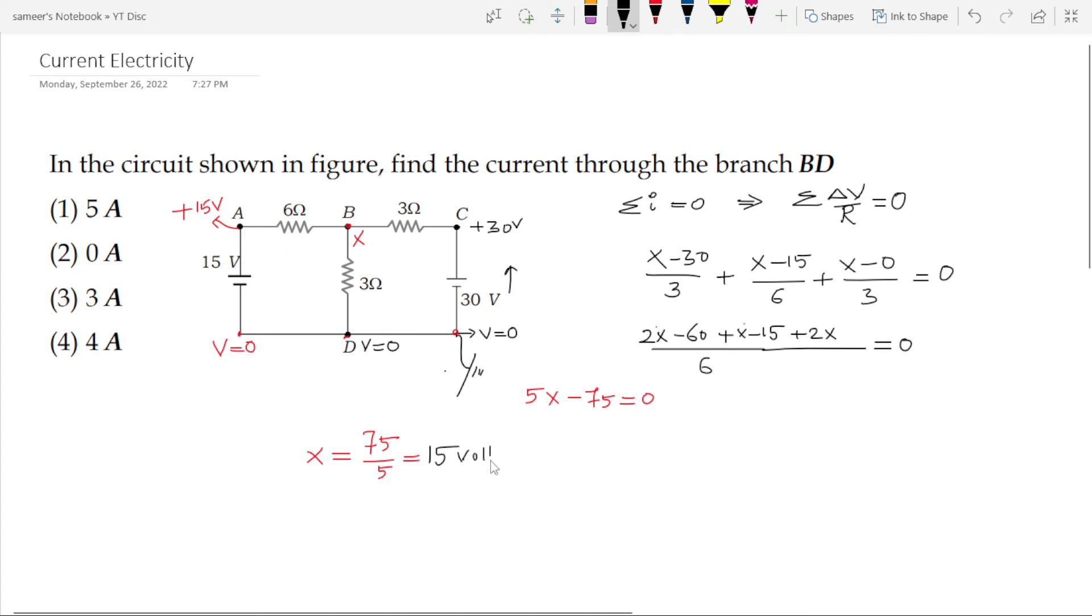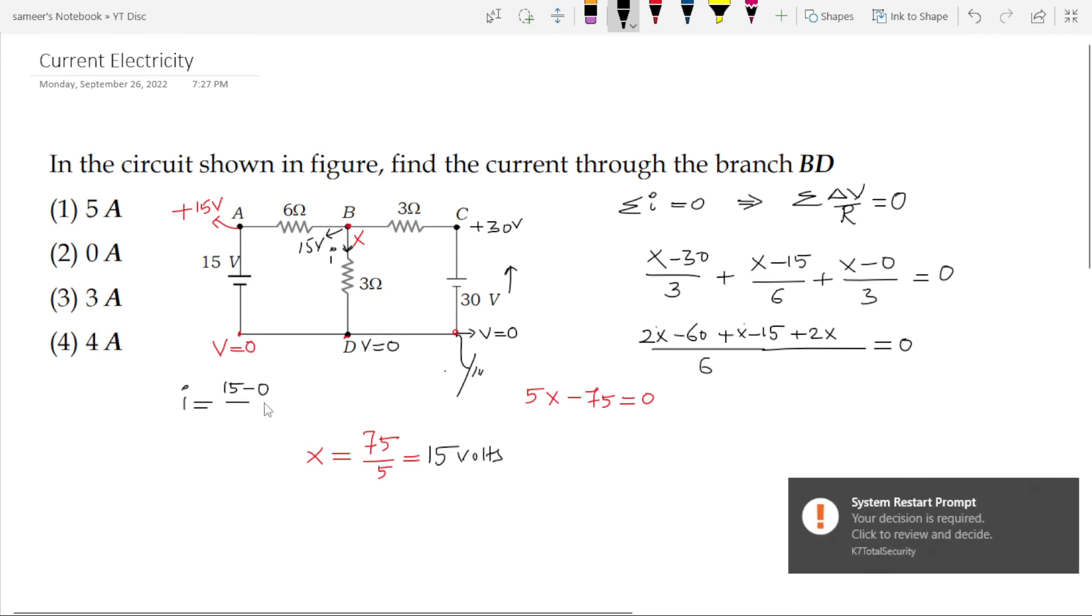The value of x is 15 volts. Since the value of x is 15 volts then the current flows from high potential to low potential and the current in 3 Ohm becomes i is equal to delta v by r which is 15 minus 0 upon 3 that will give you 5 Ampere.